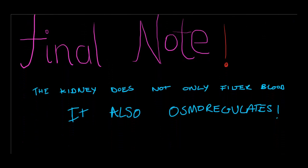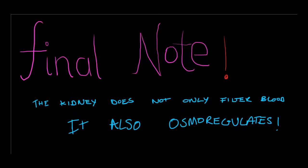One final note: the kidney does not only filter blood — it also osmoregulates. Because the kidney has multiple stages of reabsorption and concentration, it allows the body to osmoregulate. If we had too much water in our body, it would get excreted by the kidneys. If we had too little water, the kidneys would conserve it. This relates to ADH and Aldosterone, which were discussed in previous videos.